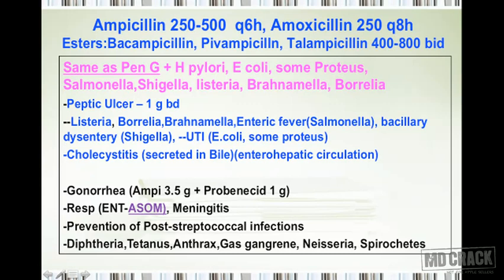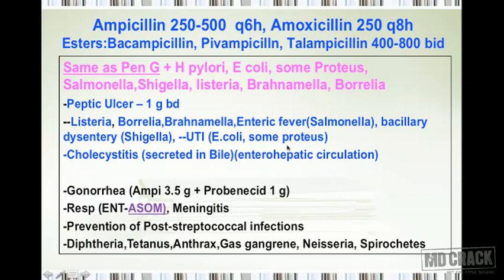As for uses, aminopenicillins are extremely useful in peptic ulcer — now proven to be due to H. pylori infection — using 1 gram twice daily along with other drugs in triple therapy. Other important uses include Listeria (ampicillin is drug of choice), Borrelia, Branhamella, enteric fever caused by sensitive Salmonella, bacillary dysentery caused by Shigella, and urinary tract infections produced by sensitive E. coli and Proteus organisms.